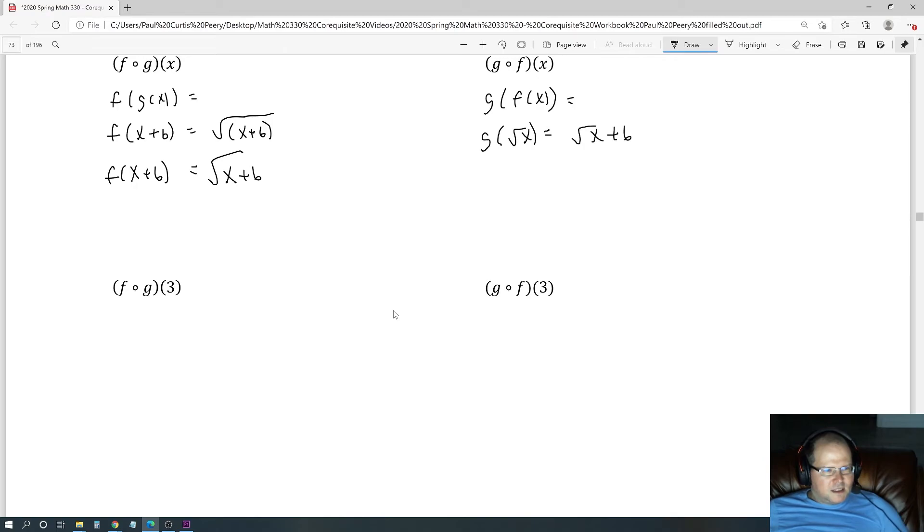They're asking us specifically what happens if x = 3. We know the general form; I'll write it above so you can see what I'm talking about. In this case, if x = 3, we have √(3 + 6).